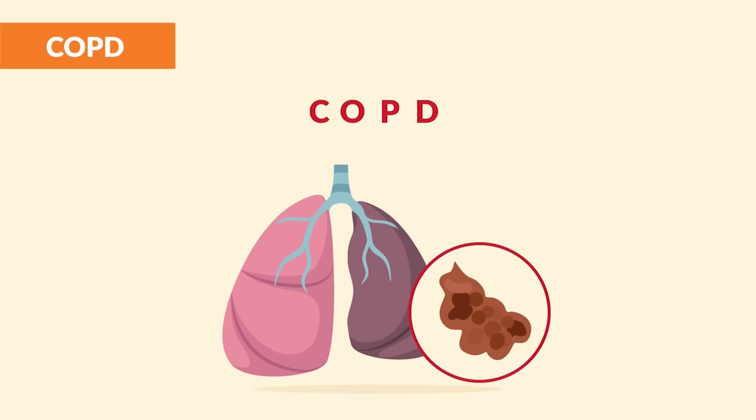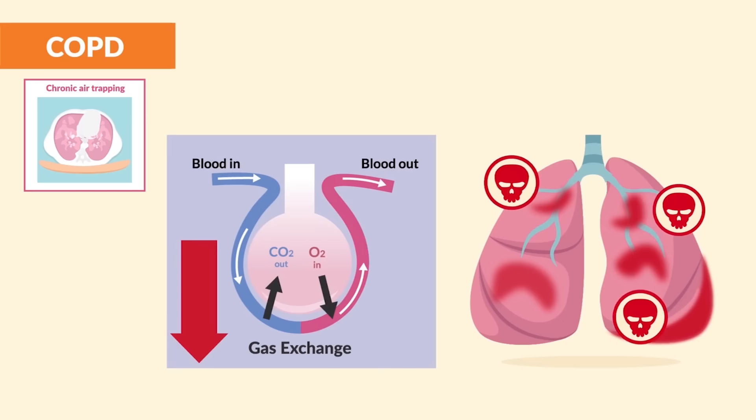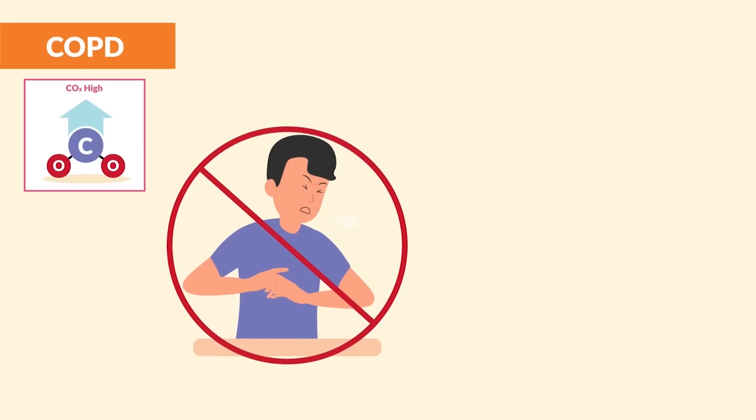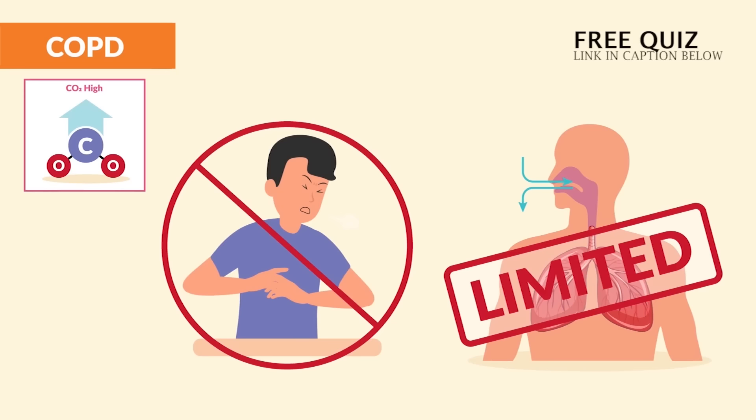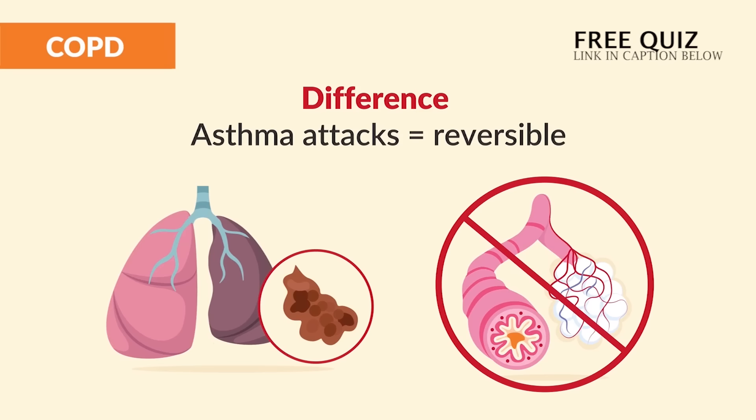Chronic obstructive pulmonary disease, or COPD for short — think of the double C's: C for chronic air trapping resulting in reduced gas exchange due to inflammatory damage to the lungs, and C for CO2 that is high. Patients can't fully breathe out due to limited airflow and the inability to fully exhale, so we get air trapping and high CO2.